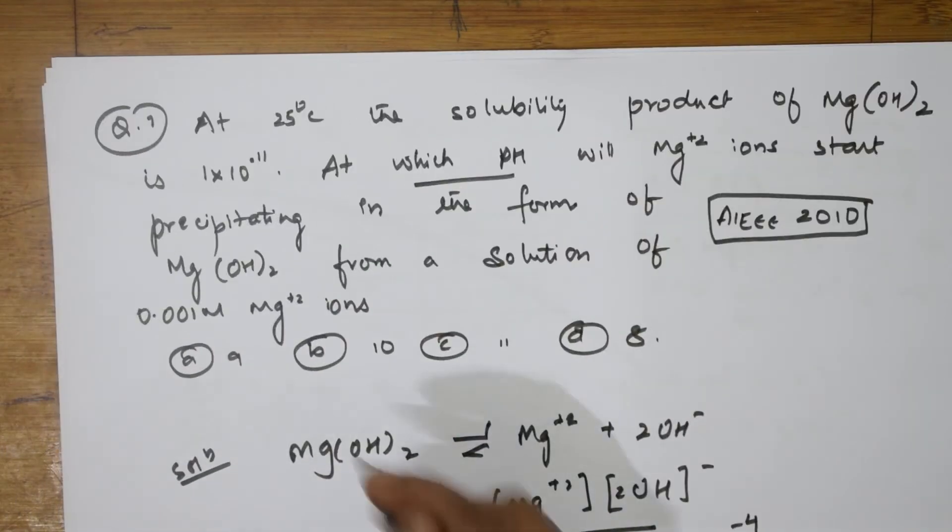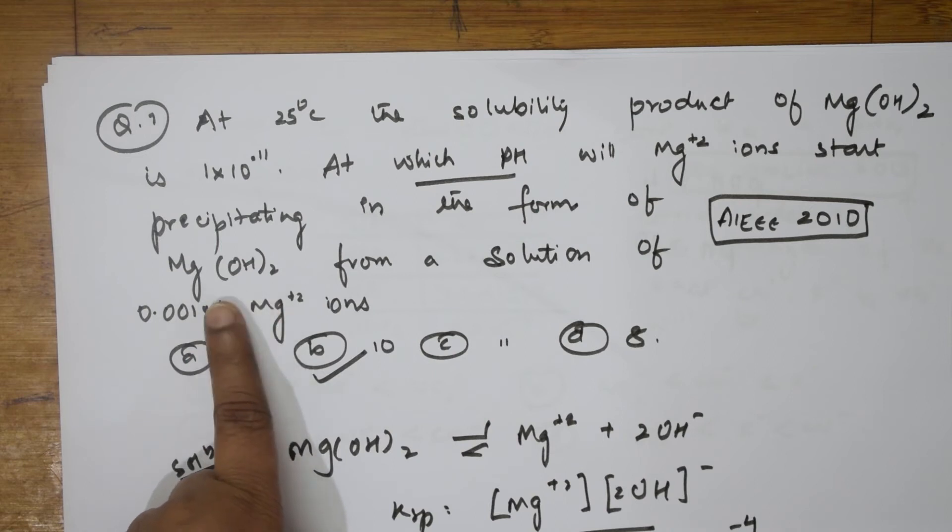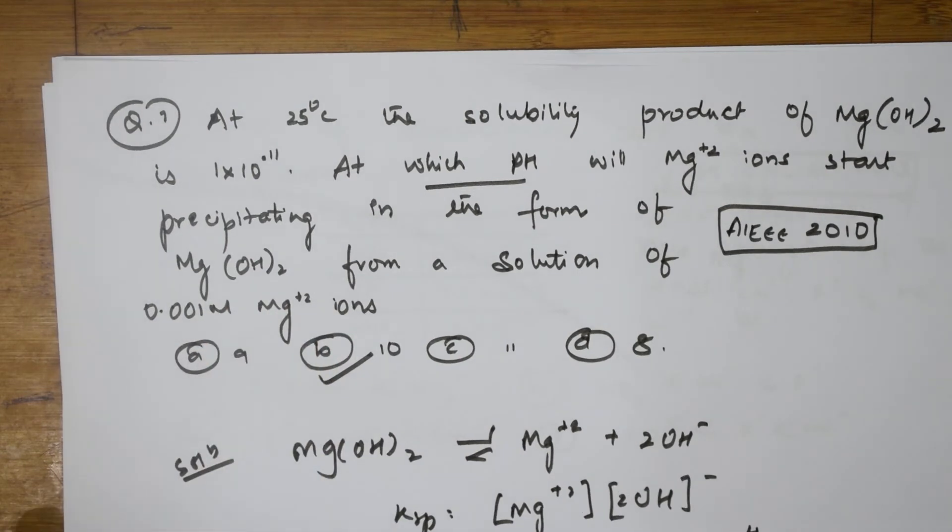Let us see this. pOH is equal to 4 and pH is equal to 10. So, what pH they said? B is correct option. Yes. Because they have asked me to find the concentration. pH in the form of magnesium hydroxide for the solution 0.01. Right. This is the answer.